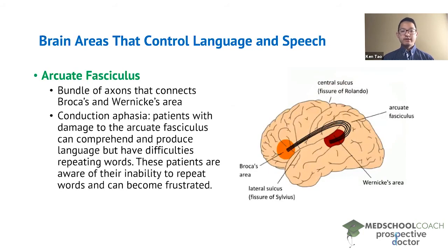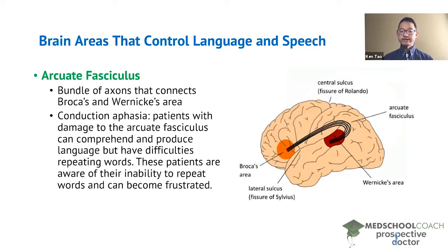Finally, we have the arcuate fasciculus. As you can see in this diagram, the arcuate fasciculus is a bundle of axons that connects Broca's area and Wernicke's area. Damage to the arcuate fasciculus results in what is called conduction aphasia. Interestingly, these patients don't have damage to Broca's area or Wernicke's area, so they can actually comprehend language and produce language. What they have difficulties with is repeating words.